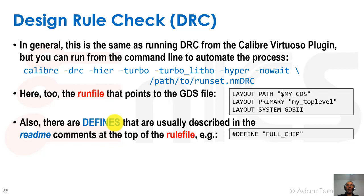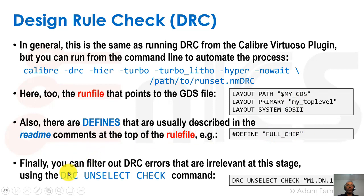When you open the rule file provided by the foundry, there is usually a large readme at the top with many options and defines. For example, if running a full chip, there will be a define like 'FULLCHIP', so we write '#define FULLCHIP' to select all full-chip DRC options. Another helpful command is 'DRC unselect check': if we don't want to run all DRC checks — to save time or clean up our report — we can unselect specific checks, such as all density checks when we're pre-density fill.